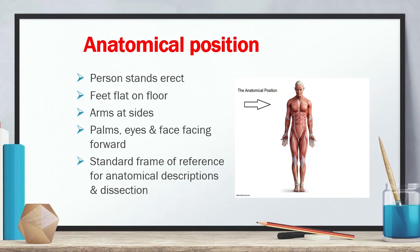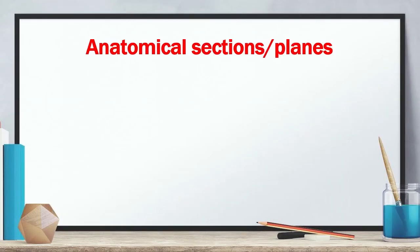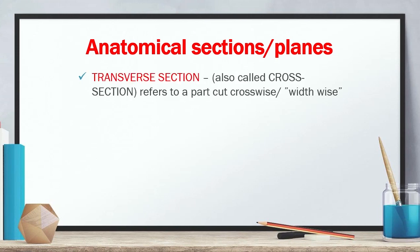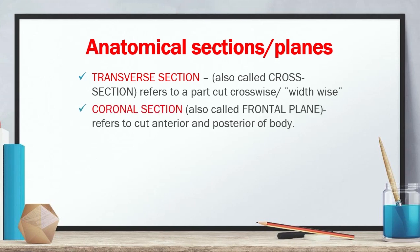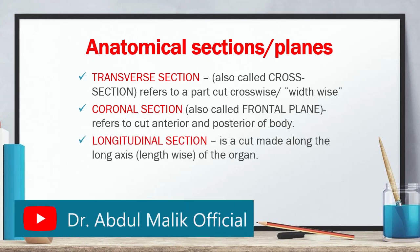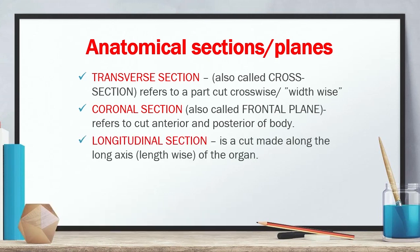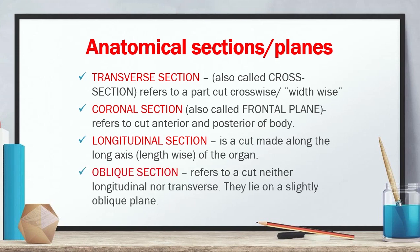Transverse section refers to a part cut crosswise or widthwise — a cross-section. Coronal section refers to a cut dividing the body into anterior and posterior parts separately. Longitudinal section is a cut made along the long axis or lengthwise of the organ. The fourth type is oblique section.